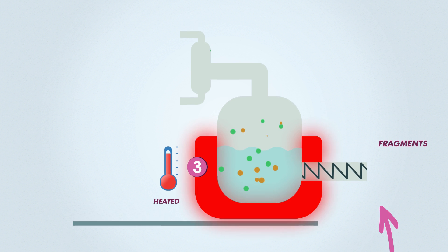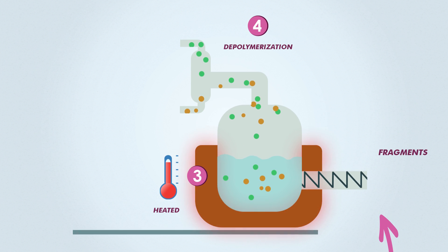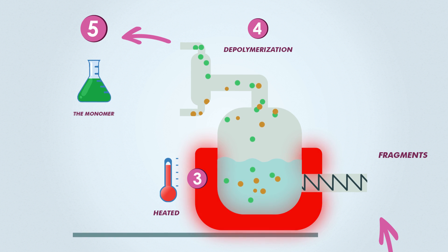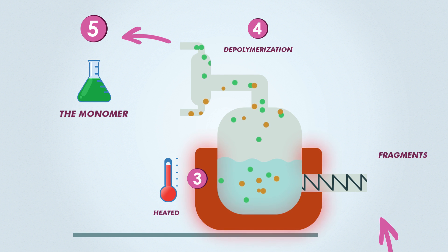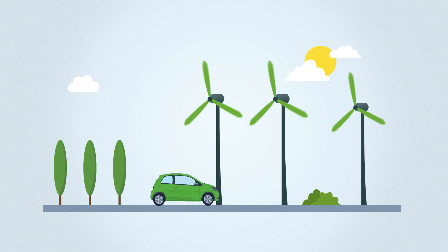This chemical process of depolymerization recovers the initial raw material, the monomer. It can then be re-injected to make new composites.